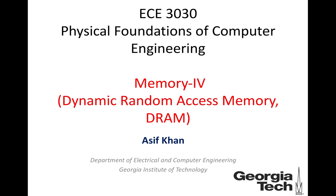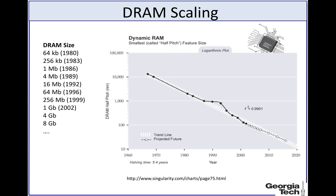Welcome to ECE 3030. In this video lecture we will continue our discussion of DRAMs. We will look into the scaling of DRAMs and the memory wall. DRAM scaling follows a similar paradigm to transistor scaling — every 18 months or so the density of transistors doubles, meaning the area footprint of a transistor becomes half every 18 months, and a similar scaling paradigm exists for DRAMs.